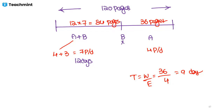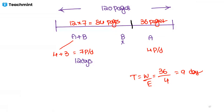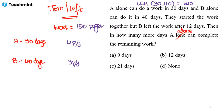This is similar to time and distance: work/efficiency = time, just like distance/speed = time. Total time from start to finish would be 12 + 9 = 21 days, but the question asks how many more days A alone needs after B left, so the answer is 9 days.